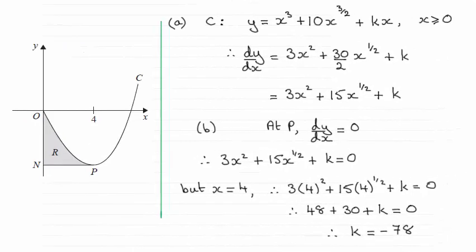Hi there. Now for part b of this question, we had to show that k was equal to minus 78. The method I used was that we're told that at P the gradient is 0 — it's a minimum point at the point where x is 4.